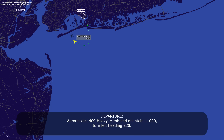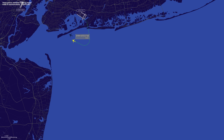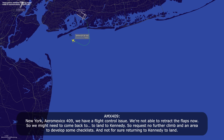Area Mexico 409 heavy, climb and maintain 11000, turn left heading 220. Area Mexico 409, we have a flight control issue. We are unable to retract the slats, so we might need to come back to land at Kennedy. Request no further climb and area to develop some checklists. Most likely returning to Kennedy to land.